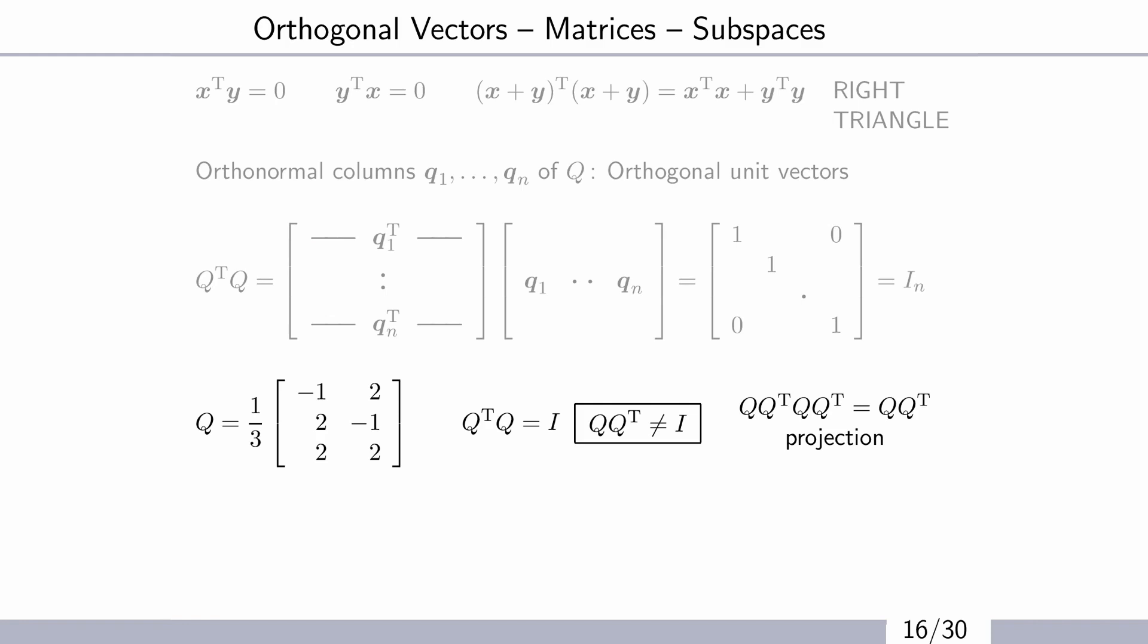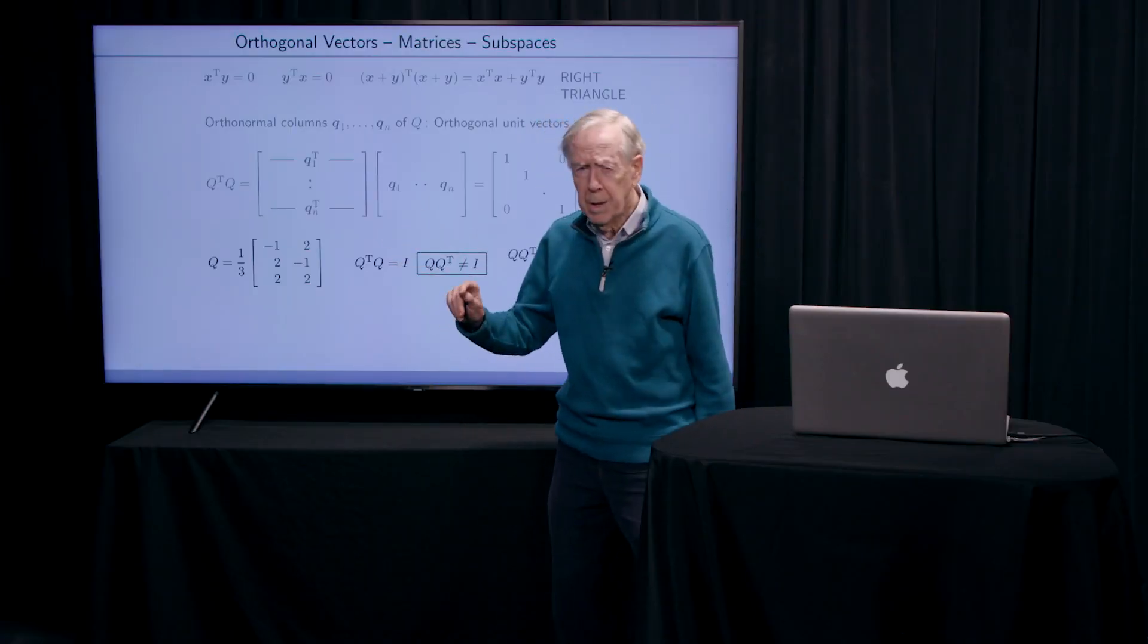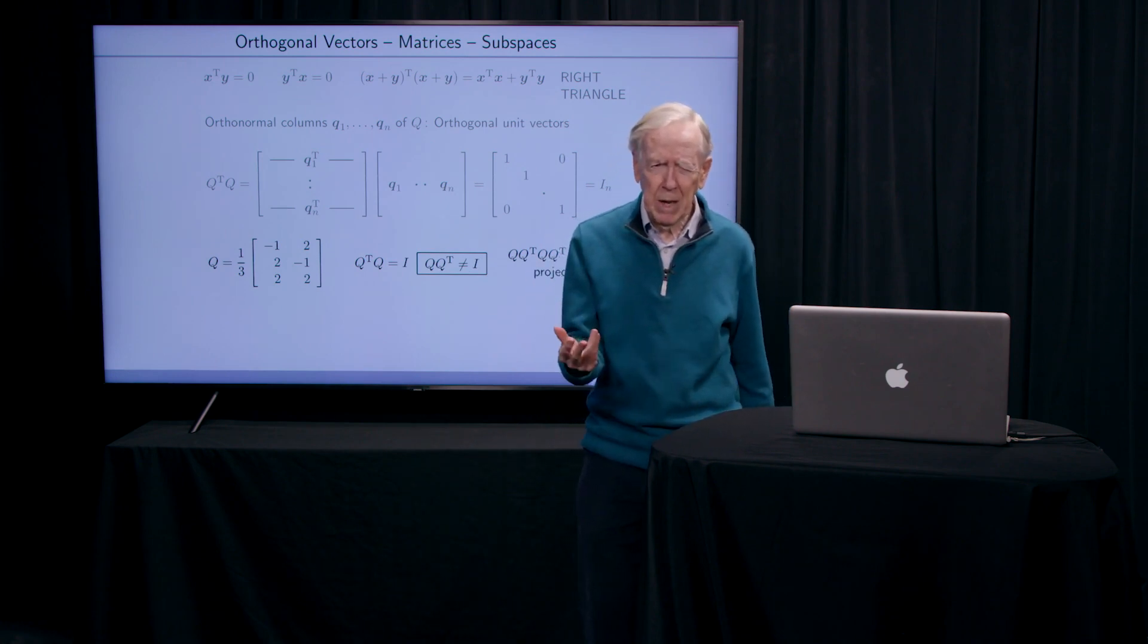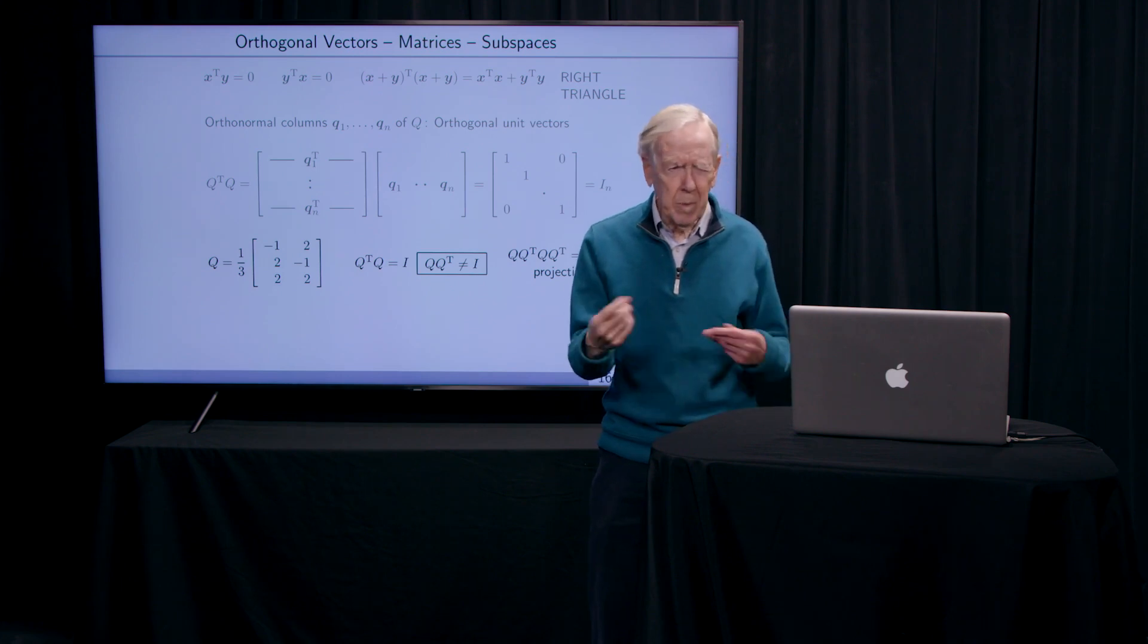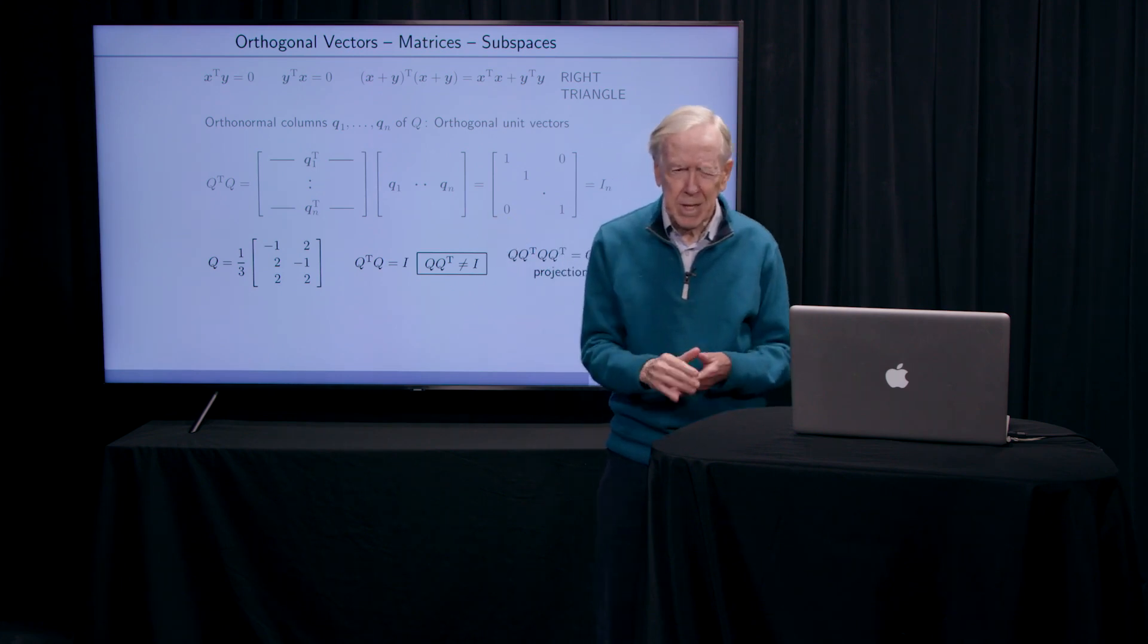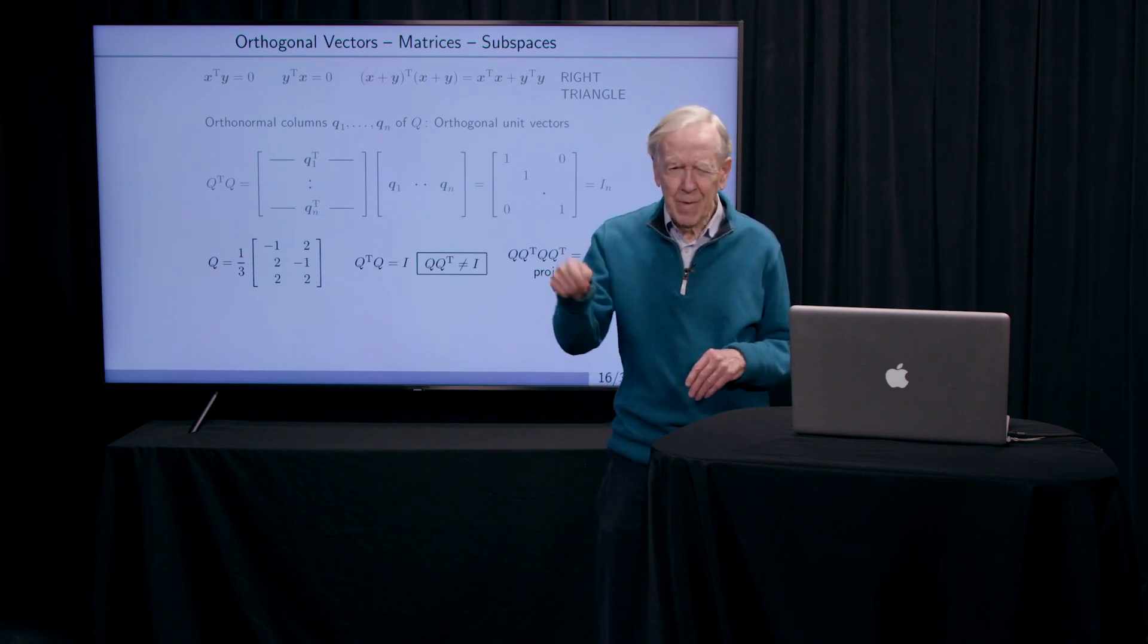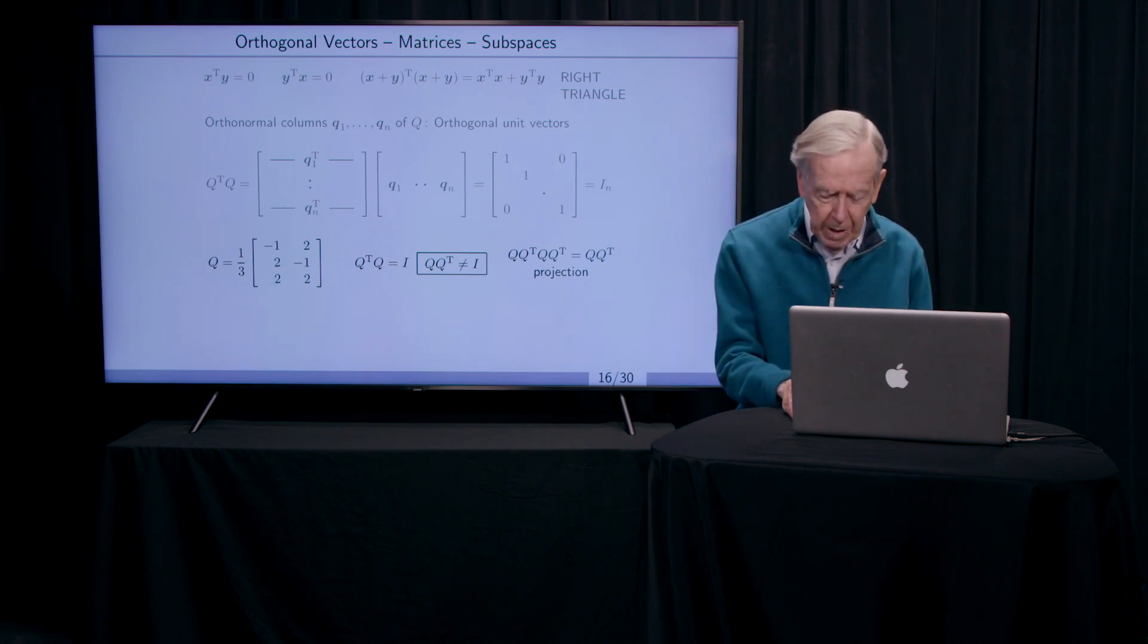So these matrices with Q transpose times Q equal I - that's the matrix shorthand for all I've just said. And those matrices are the best because they don't change the length of anything. You don't have blow up, you don't have going to 0. You can multiply together 1,000 matrices and you'll still have another orthogonal matrix. A little family of beautiful matrices, and very, very useful.